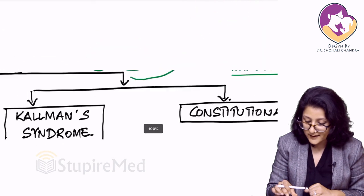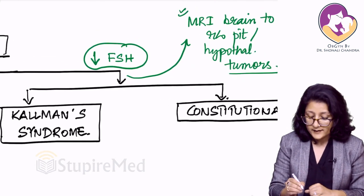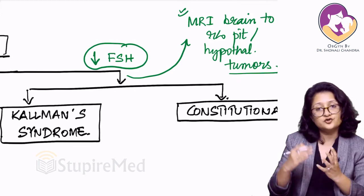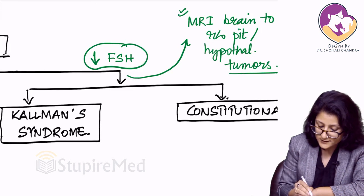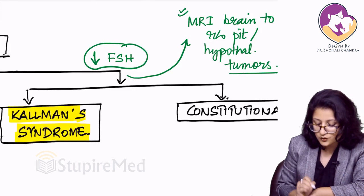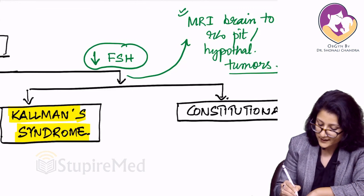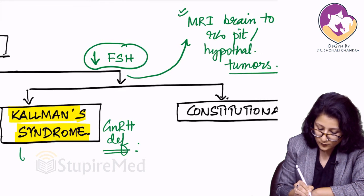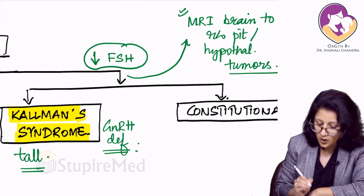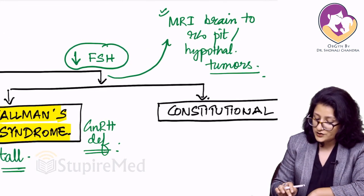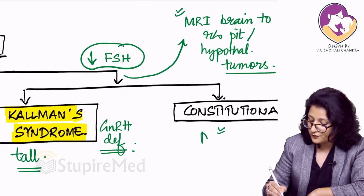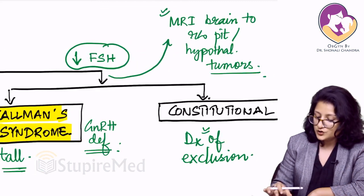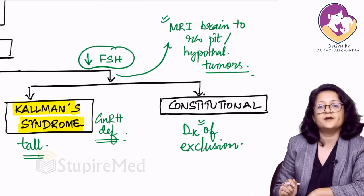Also remember that other than tumors — and tumors are less common — the other commoner cause here is Kallmann syndrome. Kallmann syndrome is a syndrome in which there is GnRH deficiency right from the start. Constitutional delay is a diagnosis of exclusion — when we do not find anything else, constitutional is the diagnosis of exclusion.